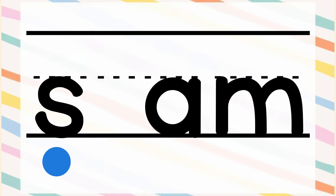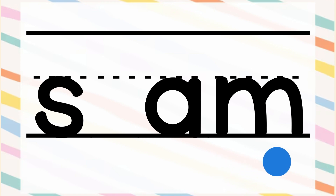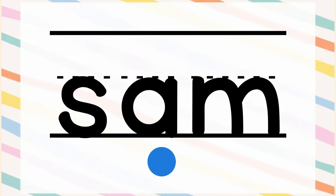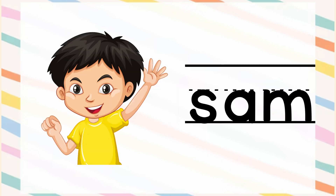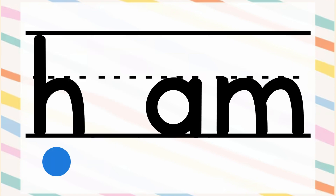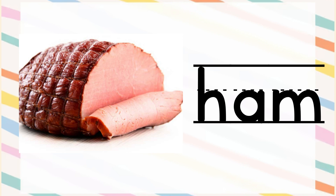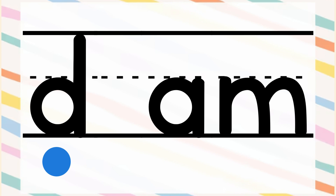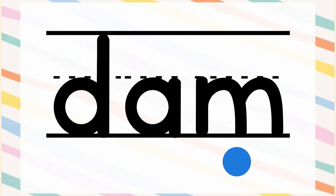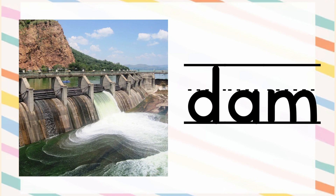AM makes the sound 'am'. So when we read it together it becomes: S - am - sam. The sound of letter D is 'd', and AM makes the sound 'am'. So when we read it together it becomes: D - am - dam. Dam!